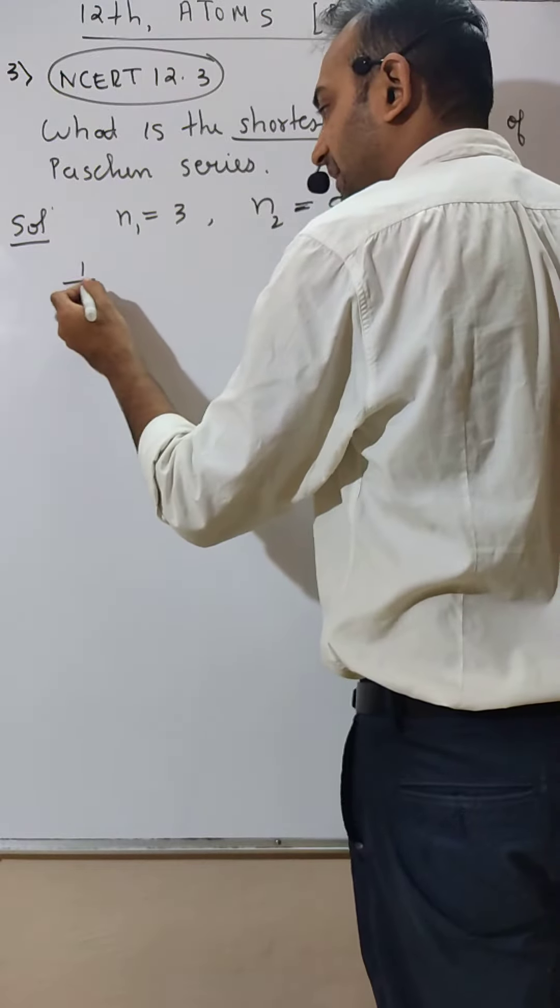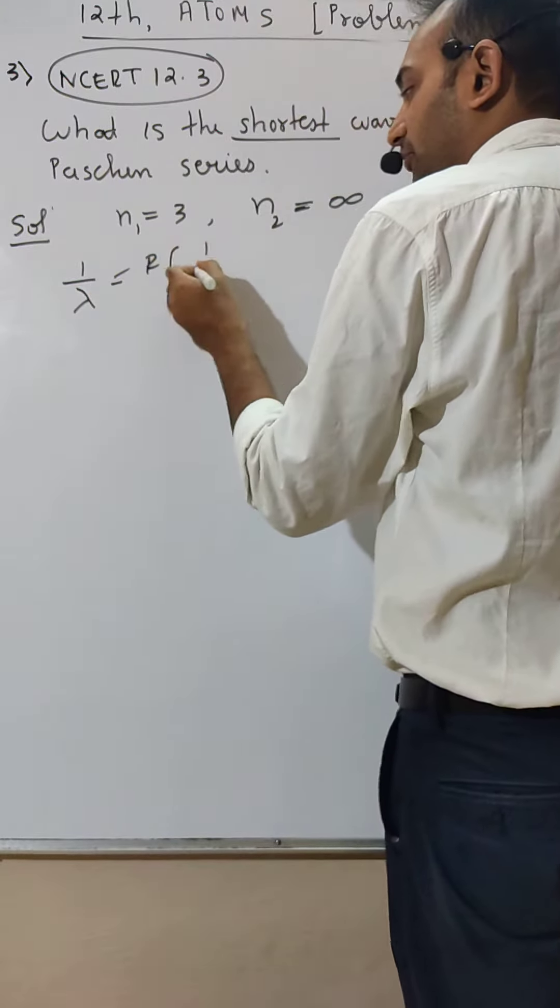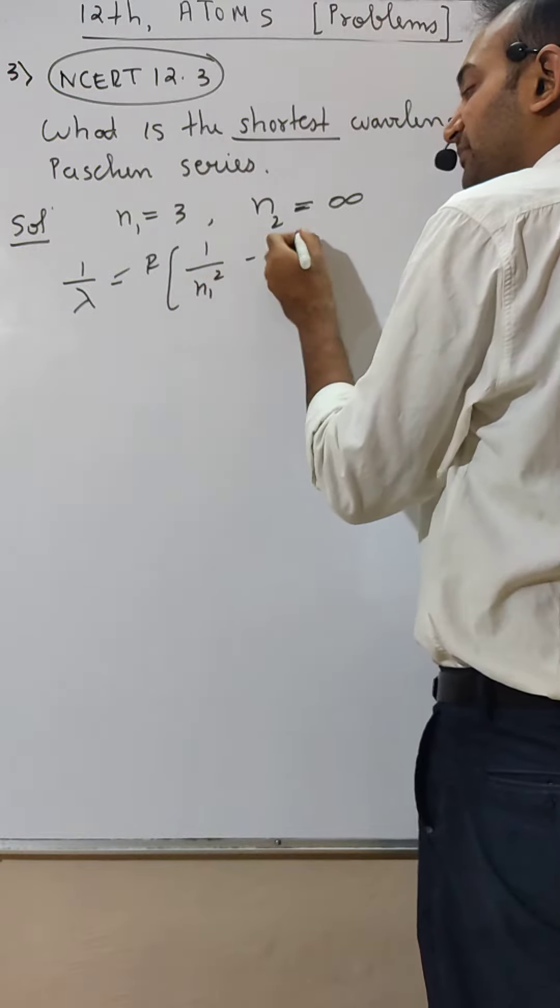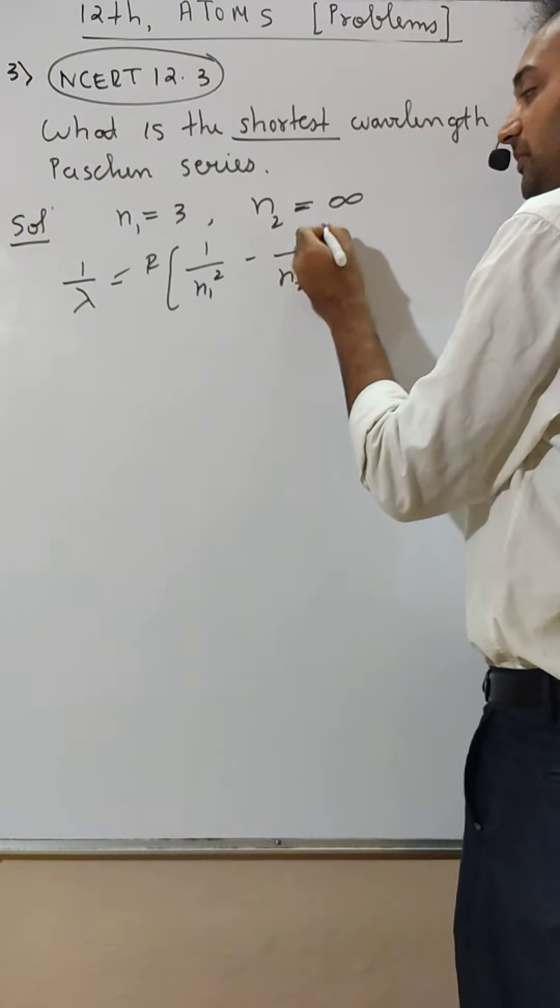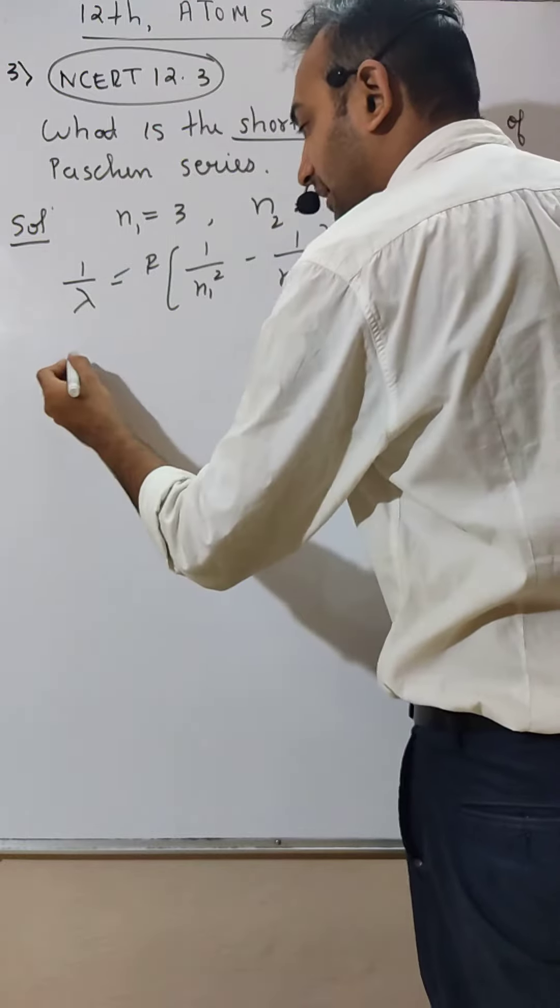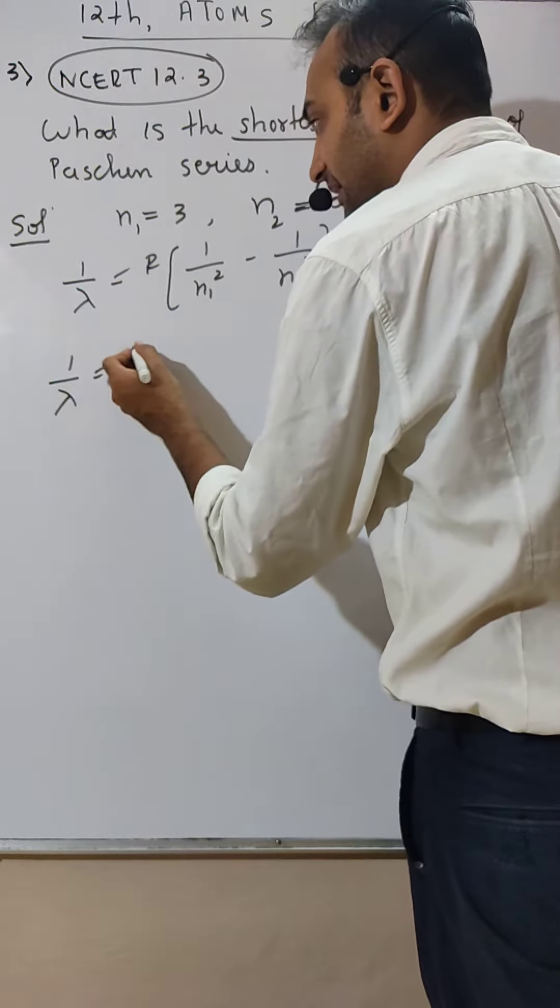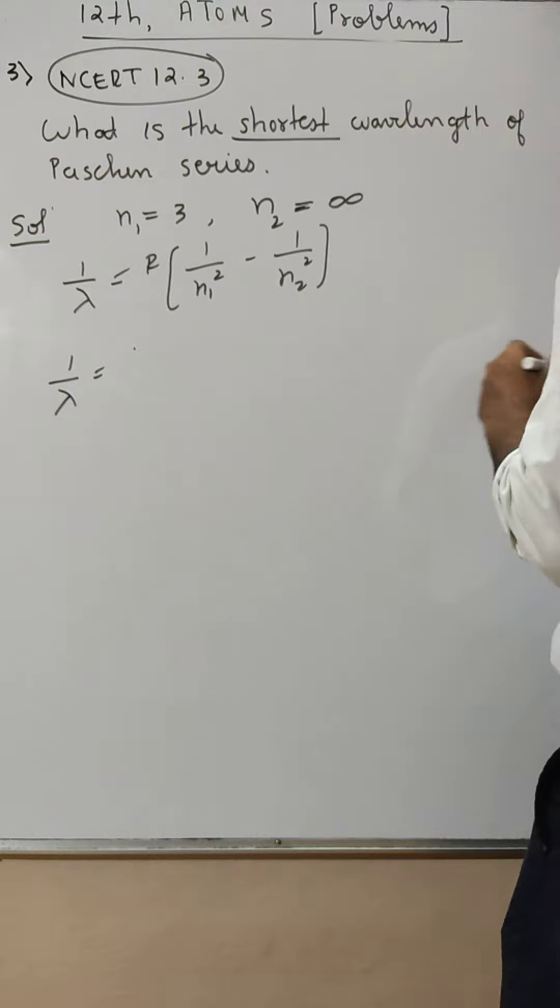So 1 by lambda is r bracket 1 by n1 square minus 1 by n2 square. 1 by lambda I don't know but here directly I can use r. They have given r.